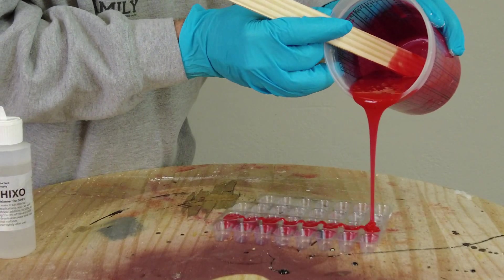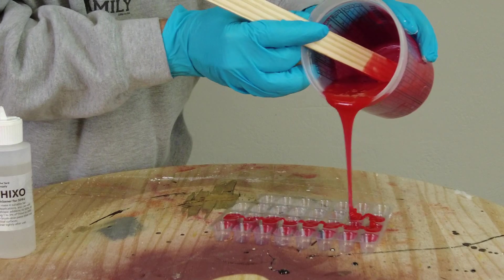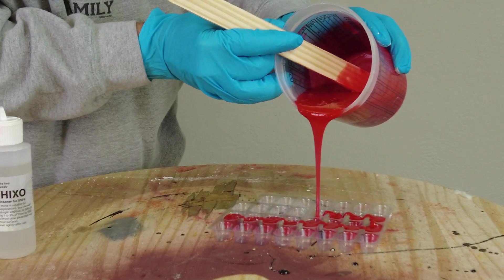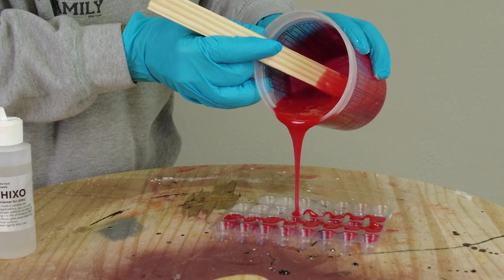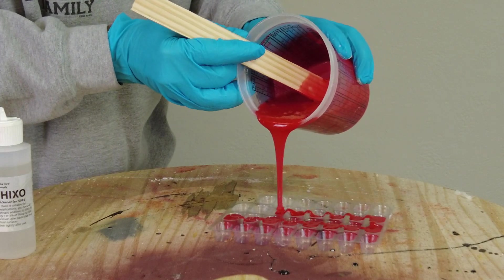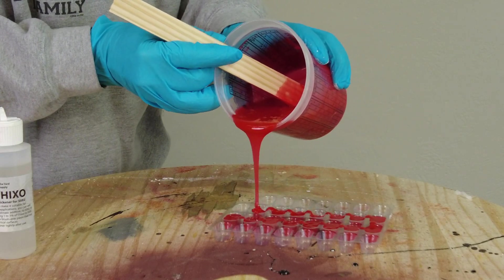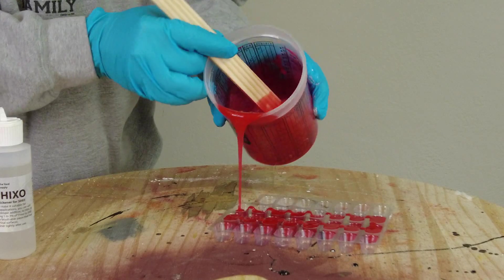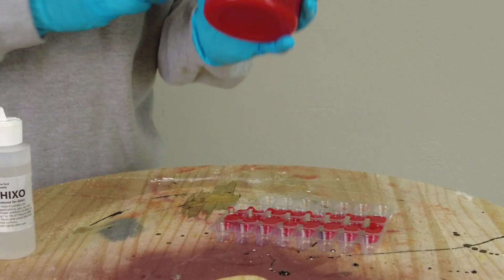We're just going to pour up a few of these with some of that silicone. We're doing this before adding the Thixo, and that's important because obviously as soon as we put the Thixo in and get that stirred, we're going to have a thixotropic paste instead of a nice flowing liquid.